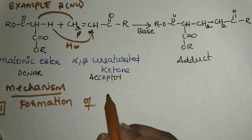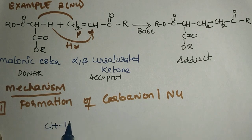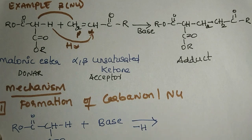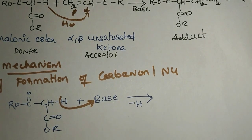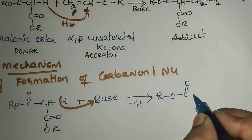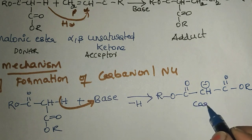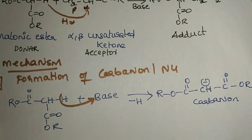The first step in the mechanism is always the formation of a carbanion or nucleophile. When malonic ester is treated with a base, the base abstracts the hydrogen attached to the methylene group. This gives rise to a carbanion. So malonic ester in the presence of base loses a hydrogen to form a carbanion. This is the first step in Michael addition.